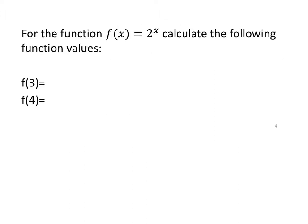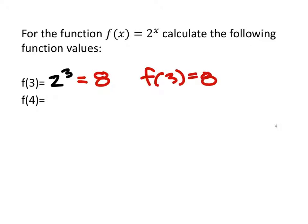For the function f of x equals 2 to the power of x, we should know how to put that in the calculator. Calculate the following function values. So f of 3 would be the same as 2 to the power of 3, because we replaced the x with 3. Typing that in the calculator, or just doing 2 times 2 times 2, we get 8. So we write the answer as f of 3 equals 8. The nice thing is we see the x value and the y value, so if we wanted to graph this as a point, it would be the ordered pair (3, 8).